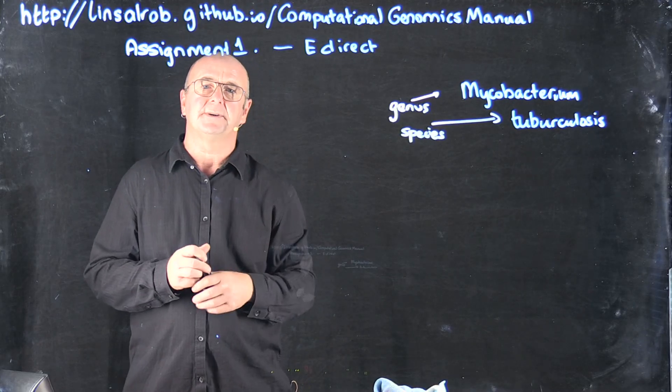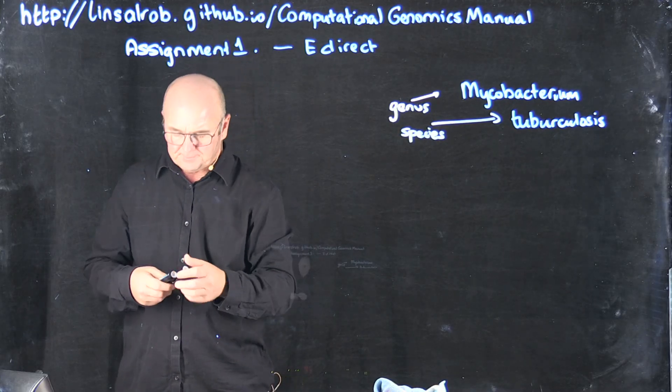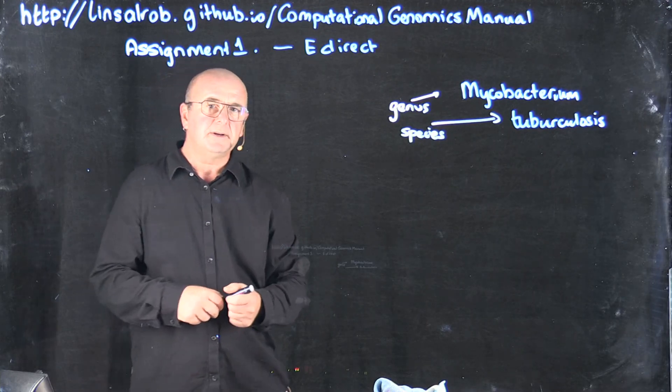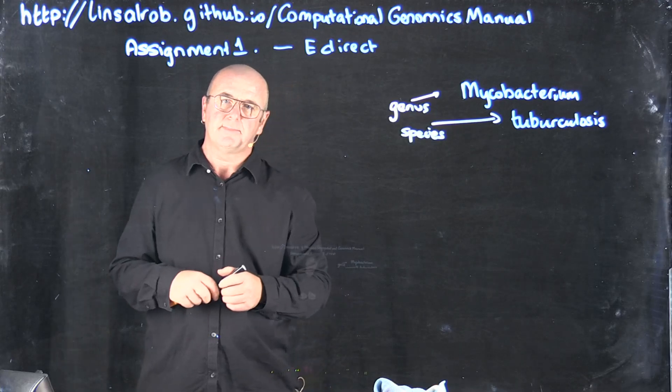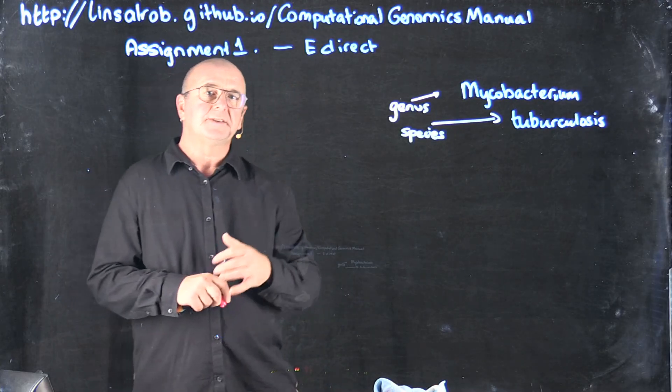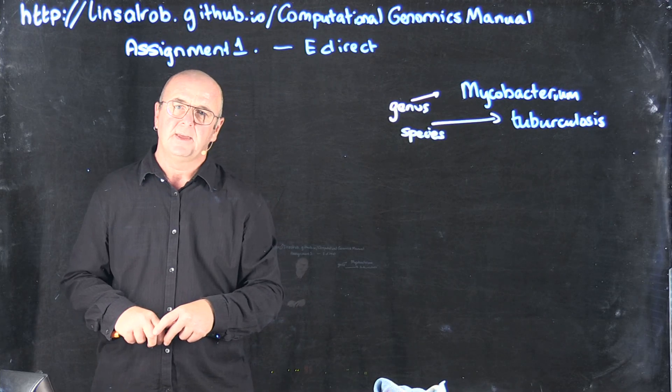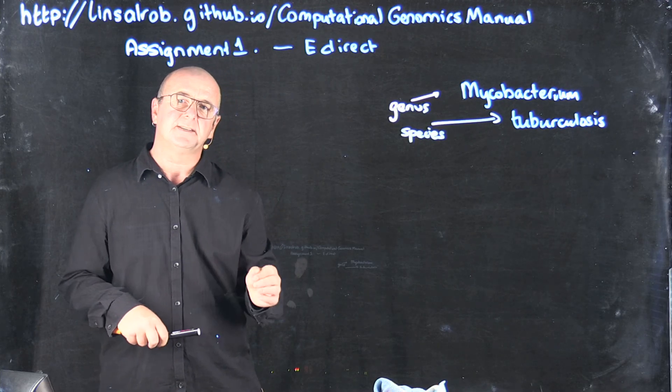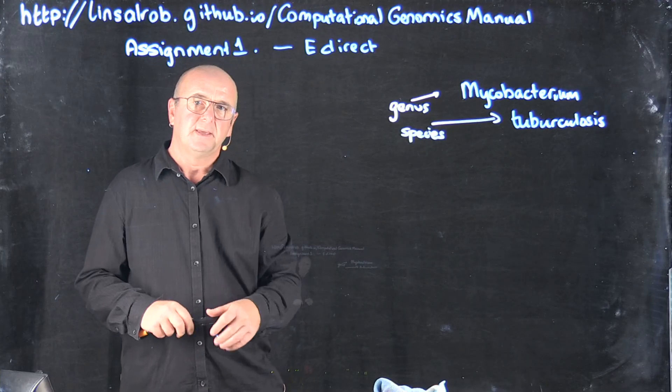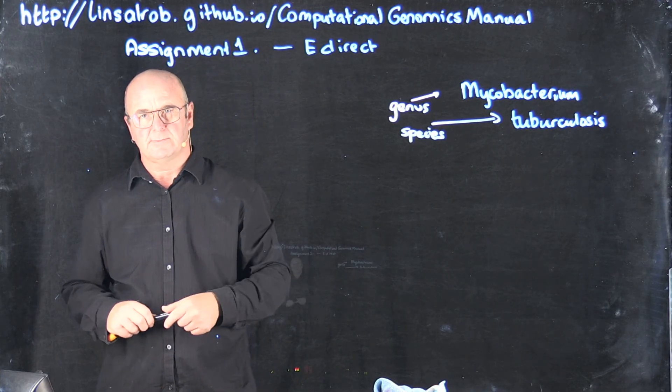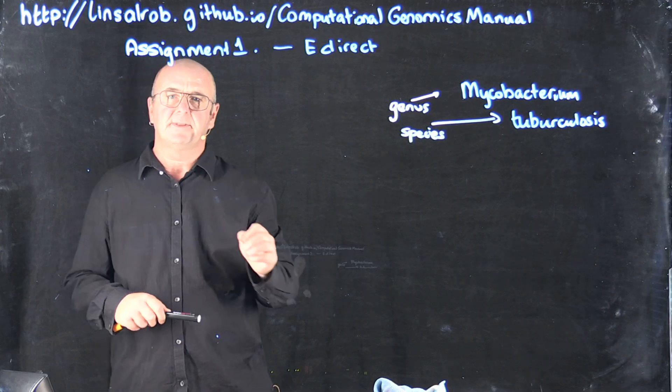The second part of the assignment is to take one particular bacteria and to download all of the genomes associated with that bacteria and calculate the average size of those genomes. In the assignment that I've posted online, I've given you a little hint that will help you with that latter step, calculating the average genome size.